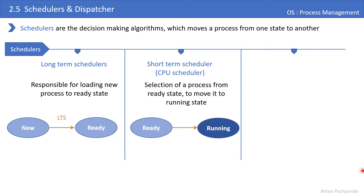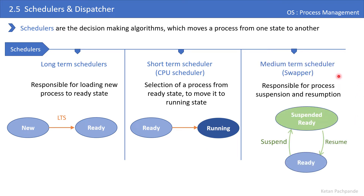The third scheduler is called the medium-term scheduler, also called the swapper. There is an extended state for the ready state called suspended ready, where processes reside on the secondary disk. Processes in the ready state are in primary memory, but if memory gets full, the OS shifts some processes to secondary disk — those are in the suspended ready state. The medium-term scheduler performs the suspend and resume operations.